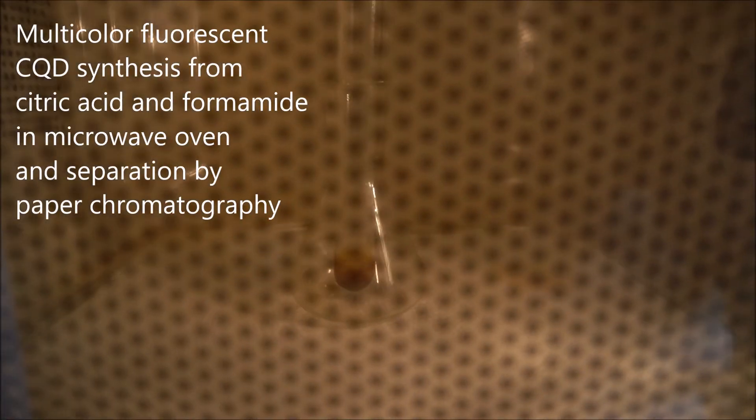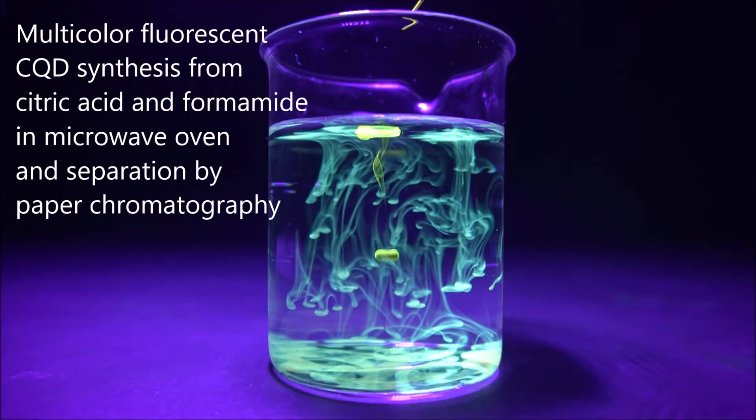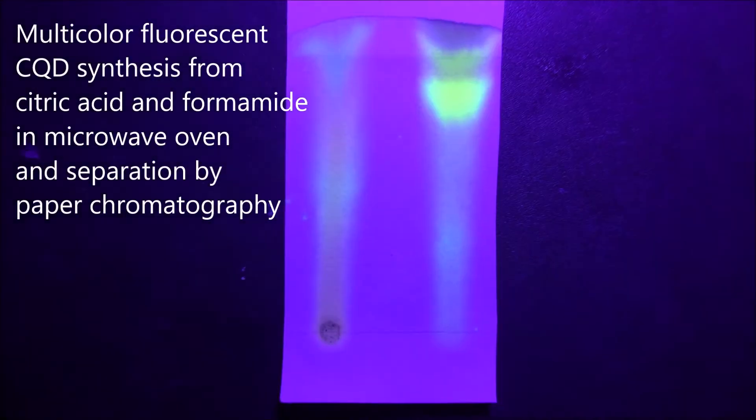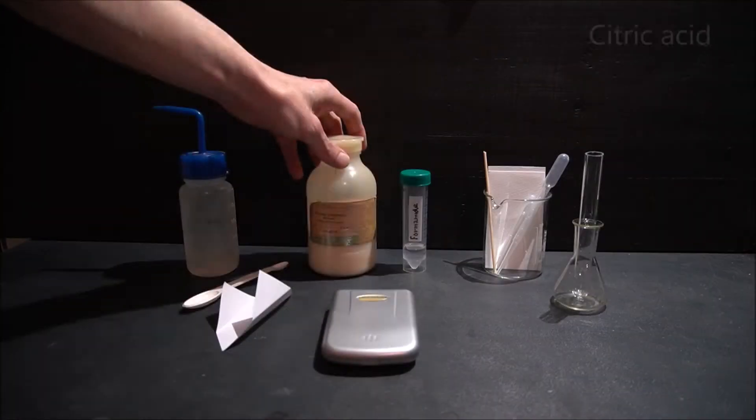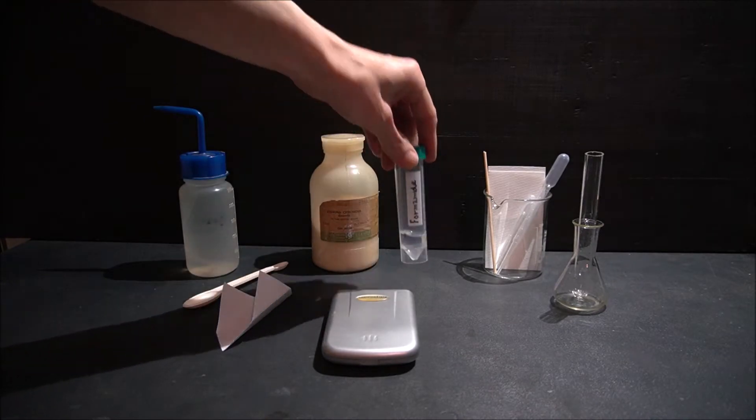Hi, let me show you how to make multicolored fluorescent carbon quantum dots and separate them by paper chromatography. We'll use citric acid and formamide for the synthesis.